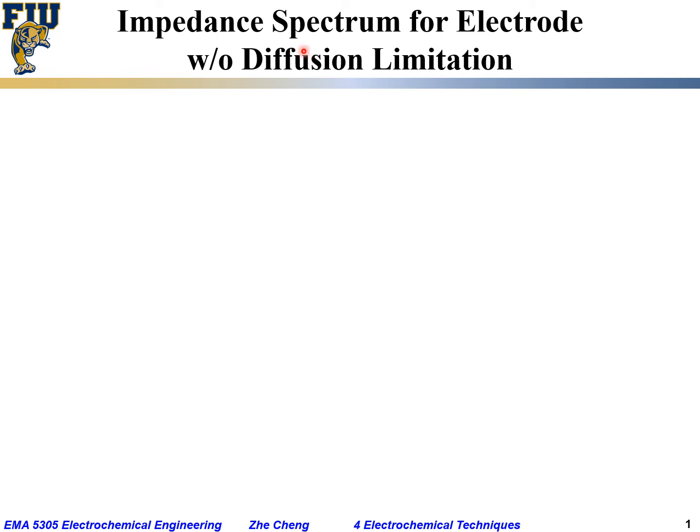We looked at the impedance spectrum for a resistor, for a capacitor, for a capacitor and resistor in series, and a capacitor and resistor in parallel. Now let's look at the impedance spectrum for an electrode reaction.